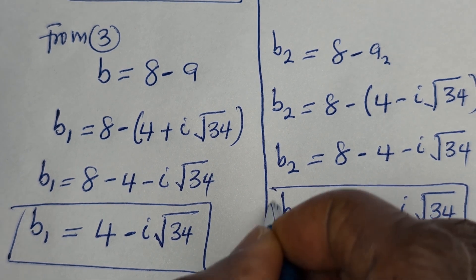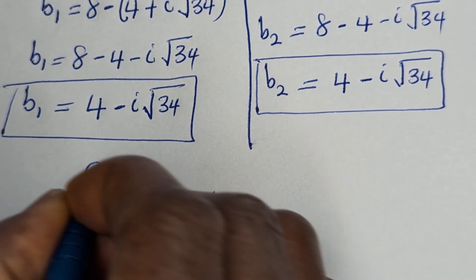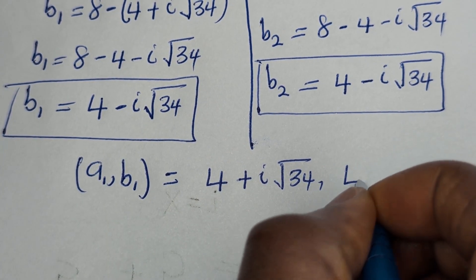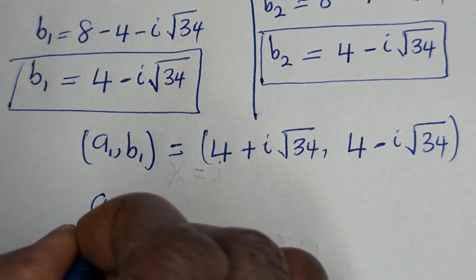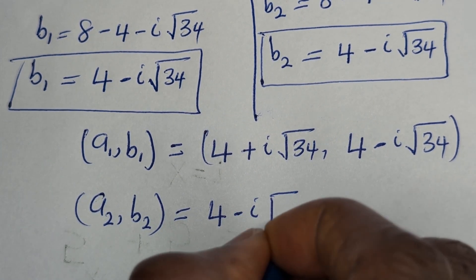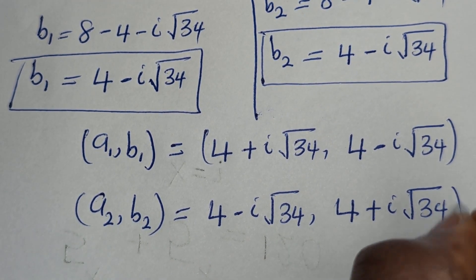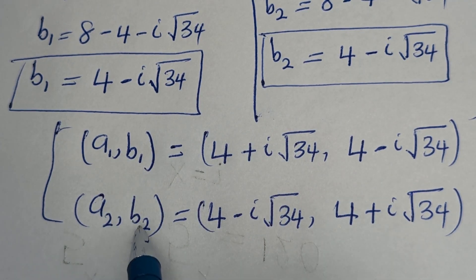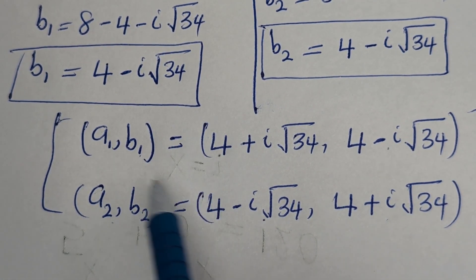Therefore our final answers are: (A1, B1) equals (4 plus i square root of 34, 4 minus i square root of 34), and (A2, B2) equals (4 minus i square root of 34, 4 plus i square root of 34). You can see that the value of A1 is equal to the value of B2, and the value of B1 is equal to the value of A2.